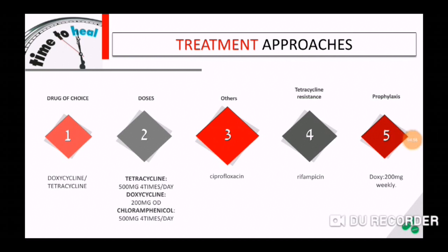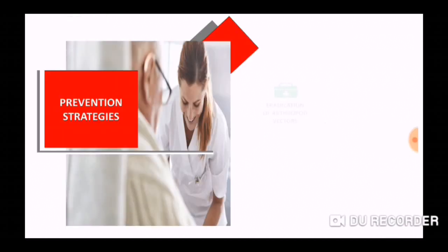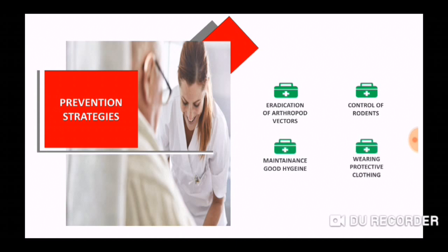The major prevention strategies for scrub typhus include eradication of arthropod vectors using insecticides like DDT and malathion, and control of rodents. Maintaining good hygiene by keeping the environment clean also helps eradicate these vectors. Wearing protective clothing and covering the body can prevent bites from mites and chiggers.